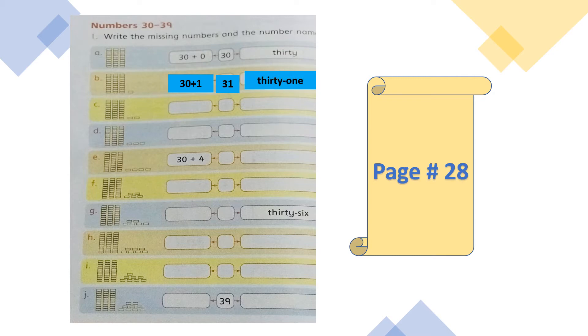The number name for 31 is T-H-I-R-T-Y, hyphen or space, O-N-E, 1 — thirty-one, 31. Now you have to solve the remaining columns in the same manner.